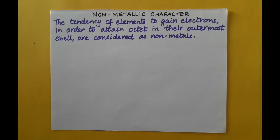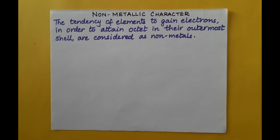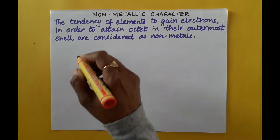The last property is non-metallic character. The tendency of elements to gain electrons in order to attain an octet in their outermost shell defines non-metals. Non-metals have 4, 5, 6, or 7 electrons in their valence shell, so they need to gain electrons to complete their octet and attain the noble gas electronic configuration.